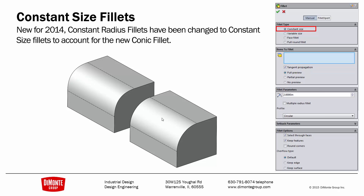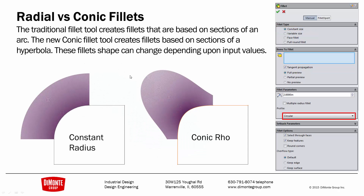So what does this all amount to? Conic fillets are particularly enjoyed by industrial designers who appreciate the ability to change the shape of the fillet along its length. Here I've used the Curvature Comb tool, which shows the rate of change of the radius, or the curvature, across the fillet.